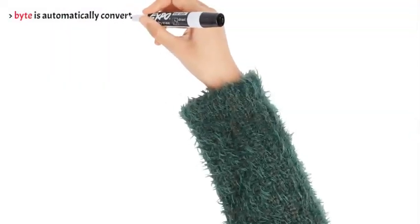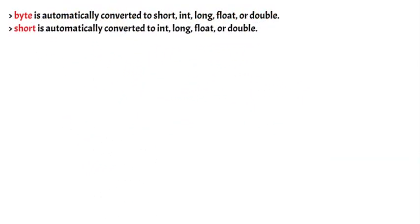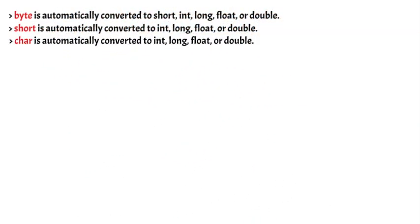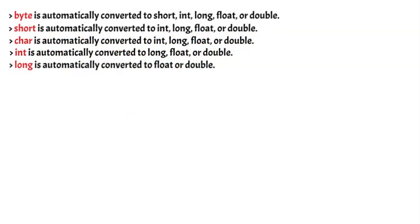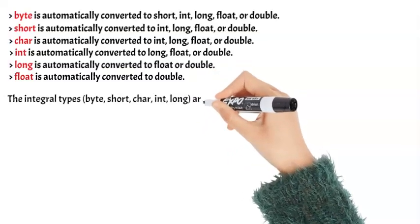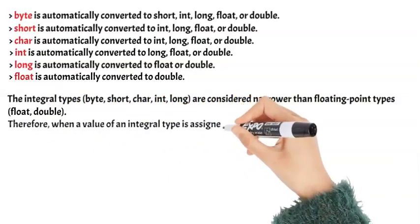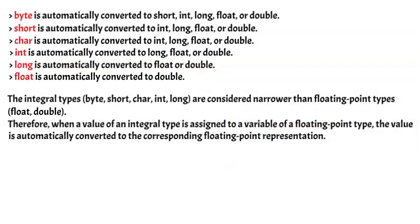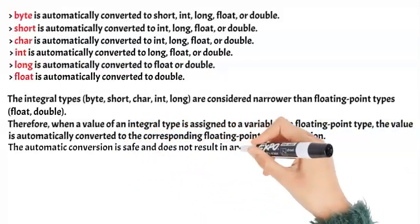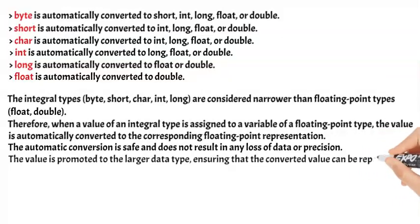Byte is automatically converted to short, int, long, float, or double. Short is automatically converted to int, long, float, or double. Char is automatically converted to int, long, float, or double. Int is automatically converted to long, float, or double. Long is automatically converted to float or double. Float is automatically converted to double. The integral types byte, short, char, int, and long are considered narrower than floating point types float and double. Therefore, when a value of an integral type is assigned to a variable of a floating point type, the value is automatically converted to the corresponding floating point representation. The automatic conversion is safe and does not result in any loss of data or precision.